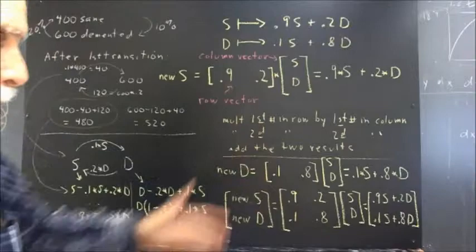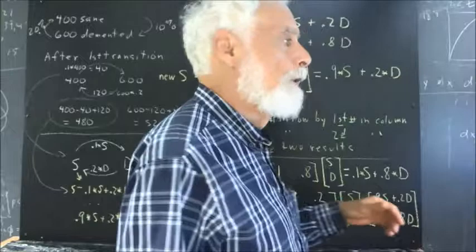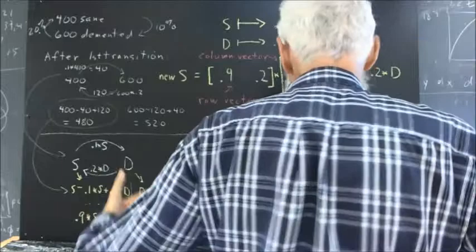Then we add the two results in this case, and if there are more than two, well, we just add them all. Okay, so what's the rule for the new D? How would I write the rule for the new number of demented? I'm blocking it with my body intentionally, so you can pause and think about it.